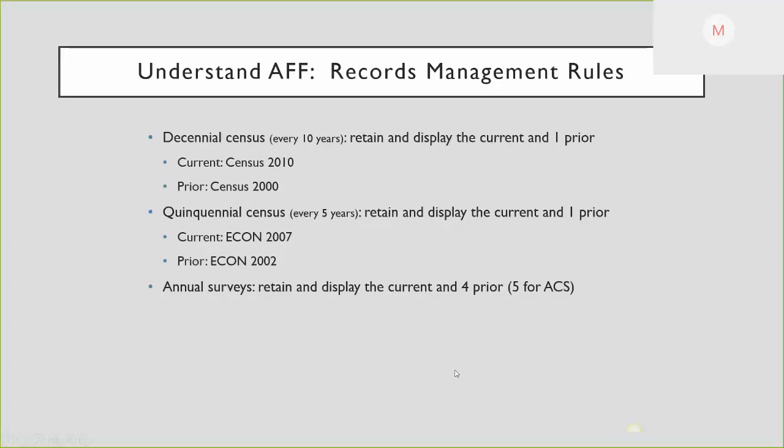These are the records management rules under which the Census Bureau operates. They only keep two of the decennial censuses — the current and one prior. For the economic census, which runs every five years, they keep the same: the current and one prior. With all of their annual surveys, their rule is usually the current and four prior. But because the American Community Survey has a five-year rolling sample, they keep the current and five prior, so there's always one year's summary file available outside the current sample.